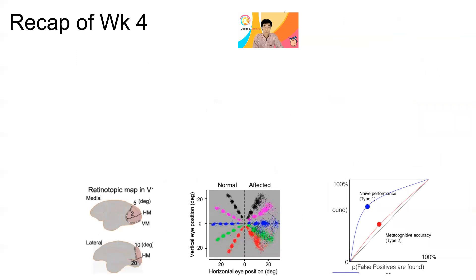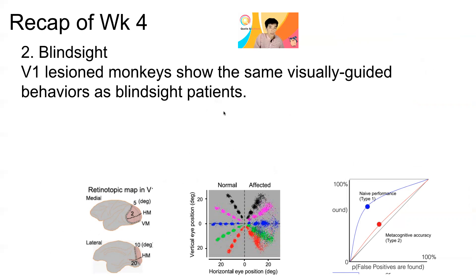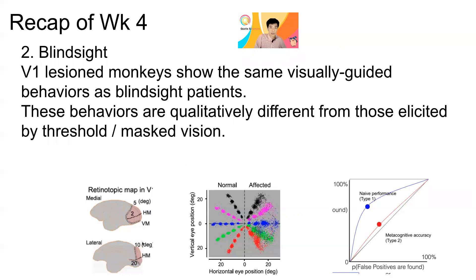To address that, we looked more carefully at the visual behavior of blindsight patients and monkeys. I explained that V1-lesioned monkeys show the same visually guided behaviors as blindsight patients. These behaviors are qualitatively different from those elicited by threshold or masked vision. The left side shows typical brain lesions induced in these monkeys, which are well-controlled and confined within V1, unlike in the patients.